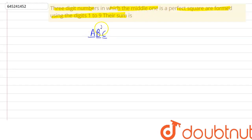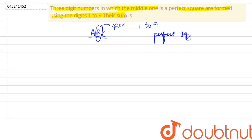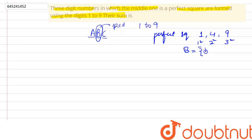B, the middle digit, must be a perfect square between numbers one to nine. Between one and nine, the perfect squares are: 1 (which is 1 squared), 4 (which is 2 squared), and 9 (which is 3 squared). Four squared is 16, which is two digits — so it's excluded. Therefore, the possible values of B are the set {1, 4, 9}.